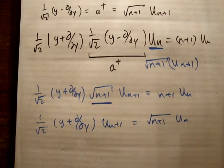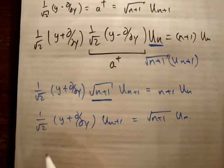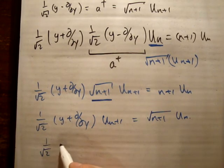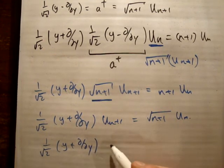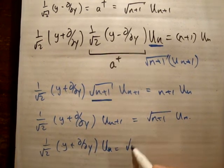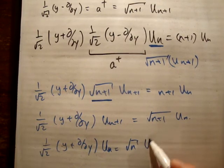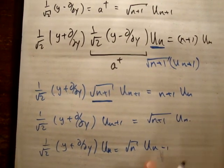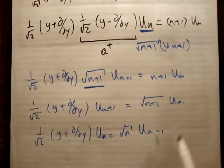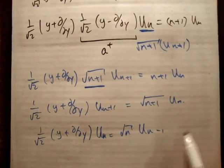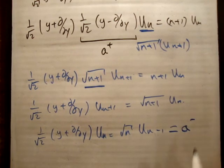Now let me see if we can write this in a better way, in a way that just makes it more clear. So we can have 1 over the square root 2, times y plus d/dy, times UN, equals root n, times UN minus 1. Which is the same as what we had up here, it's just a different way of writing it so that the annihilation aspect becomes quite apparent.